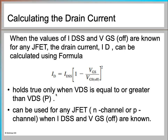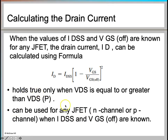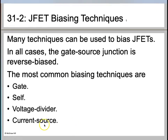When the pinch-off condition is reached, the voltage at that point represents VDS-p, meaning VDS must be equal to or greater than your pinch-off voltage. This formula can be used for any JFET, N-channel or P-channel, when IDSS and VGS-off are known. In most numerical problems, IDSS and VGS-off will be given, where VGS-off typically indicates a value of negative four volts.